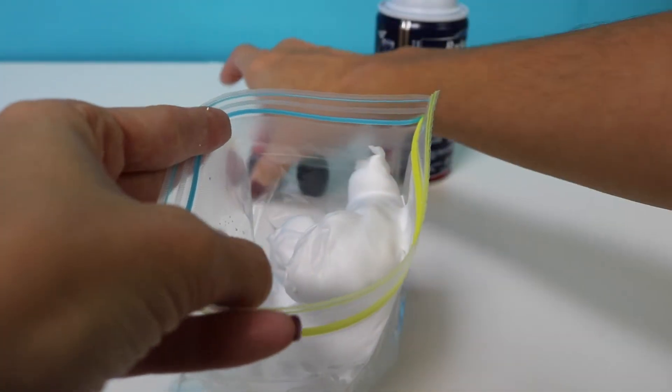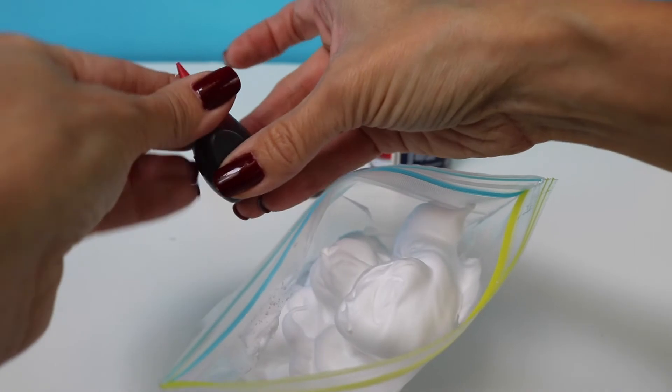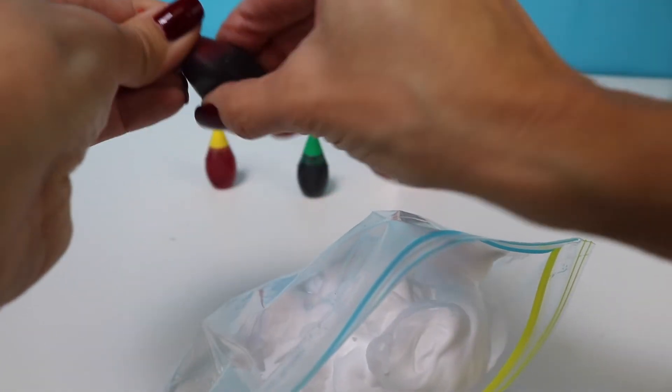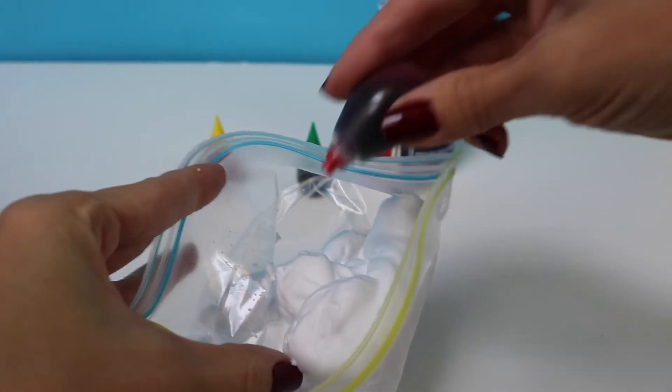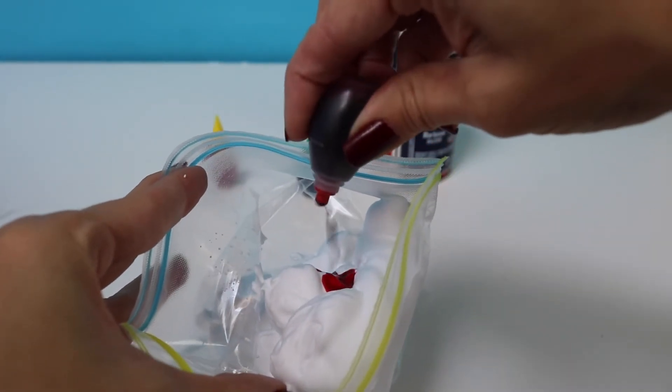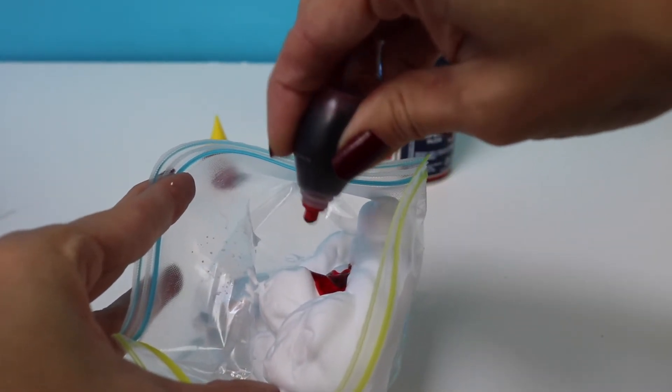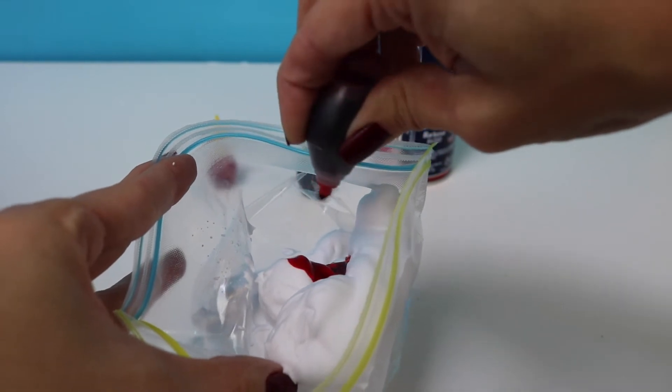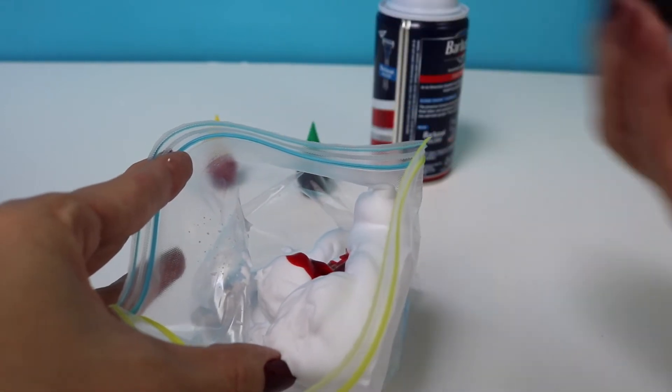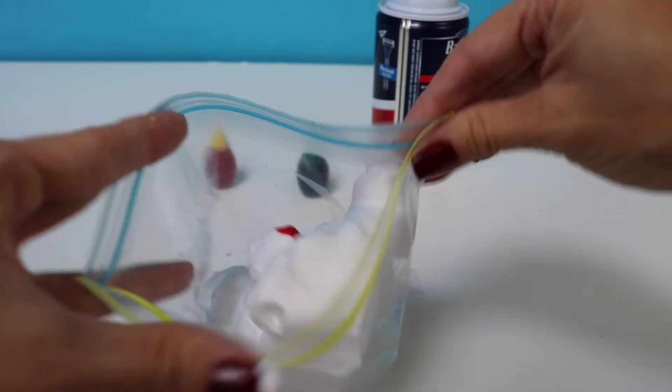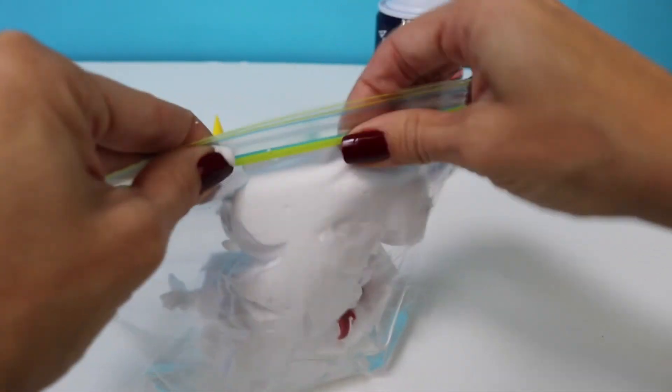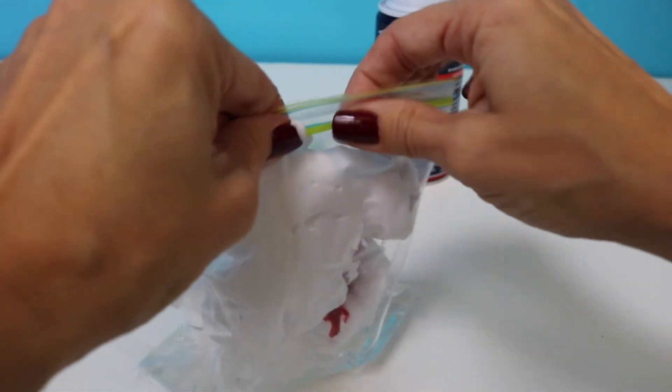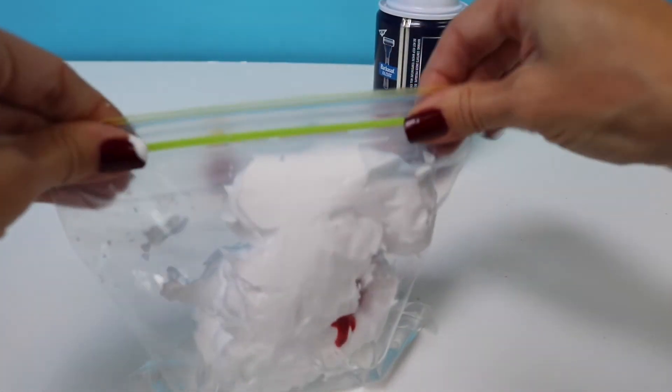Then we're going to add our color in. I think we're going to use this red color, and if I'm correct this red color will actually come out like a pink. Wow that'll be really cool. So let's see what happens. Seal up that bag again. Make sure you seal it up really good, or all this stuff will squirt out and we don't want that to happen.